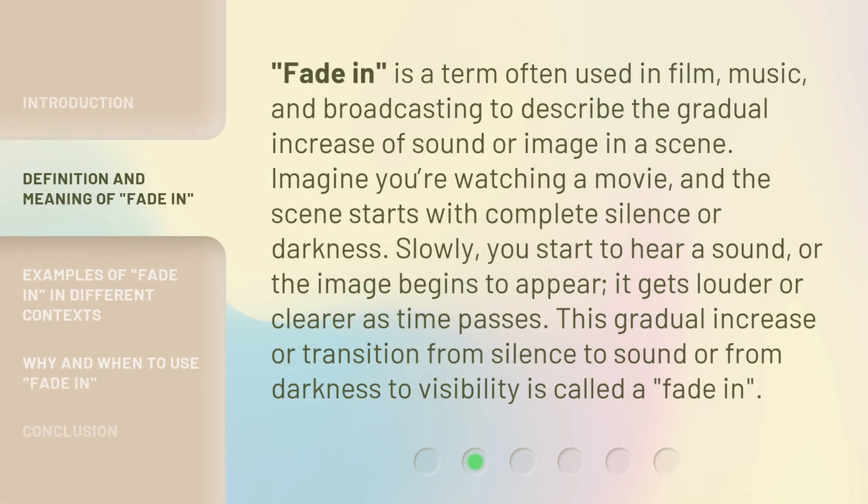Fade In is a term often used in film, music, and broadcasting to describe the gradual increase of sound or image in a scene. Imagine you're watching a movie and the scene starts with complete silence or darkness. Slowly, you start to hear a sound, or the image begins to appear. It gets louder or clearer as time passes. This gradual transition from silence to sound or from darkness to visibility is called a Fade In.